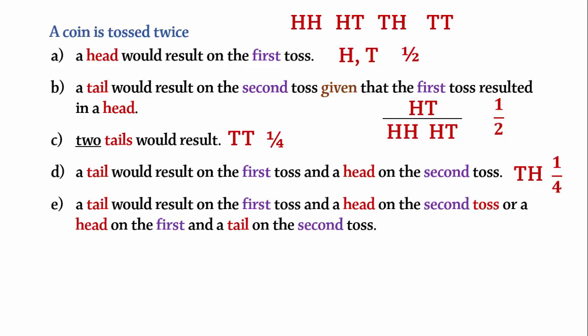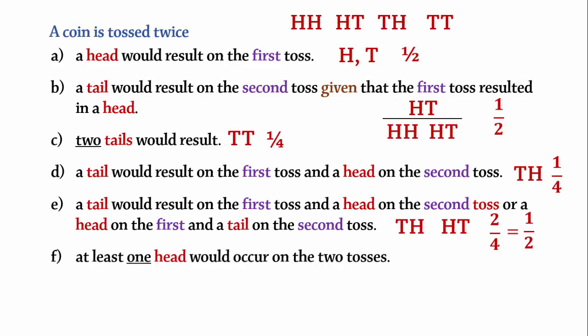Part E. What is the probability that a tail would result on the first toss and a head on the second toss, or a head on the first and a tail on the second toss? We are simply required to calculate the probability of tail-head or head-tail. This represents two of the four possible outcomes. Therefore, the probability is 2/4, which equals half. Part F. What is the probability that at least one head would occur on the two tosses? There is at least one head in three of the four outcomes: head-head, head-tail, and tail-head. Therefore, the probability of obtaining at least one head is 3/4.